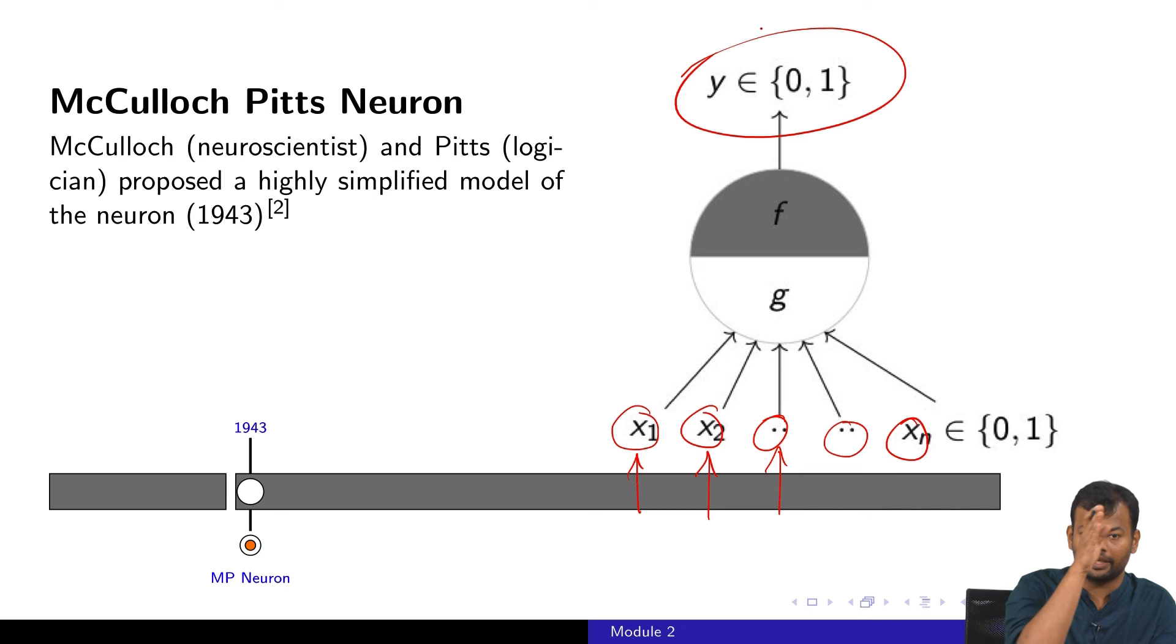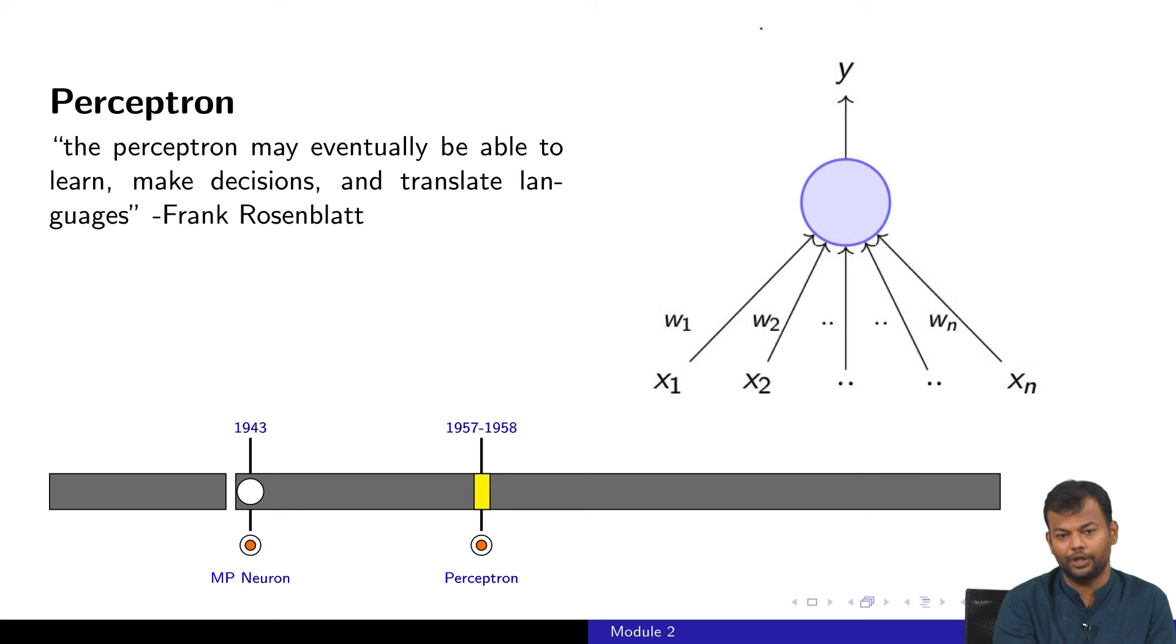Now we have come to an artificial neuron. This is not a biological neuron, this is how you would implement it as a machine. That was in 1943. Around 1956 in a conference the term artificial intelligence was formally coined. And within one or two years Frank Rosenblatt came up with this perceptron model. He said that the perceptron may eventually be able to learn, make decisions, and translate languages.